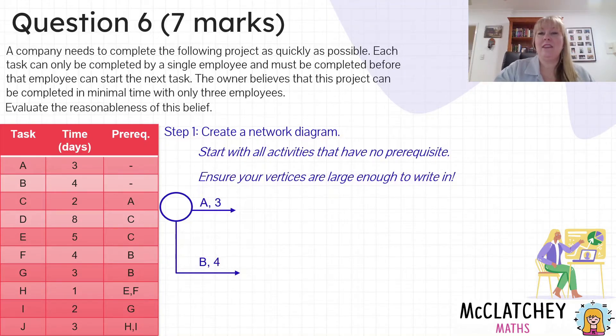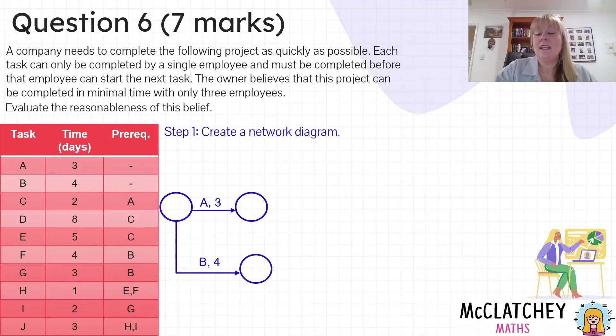We've got activity A and activity B coming out. It's also important to remember that you're going to need to possibly redraw parts of this as you go and discover different things. So I would always say perhaps start with a lead pencil and then go over it with a pen at the end. Coming out of each of these activities is a new activity. The end of that activity is marked with an empty vertex which also starts the next activity. Coming out of the next one we've got C. C comes out of A with a length of two days.